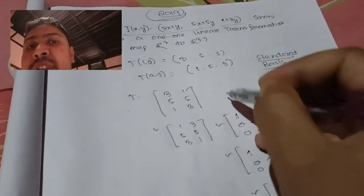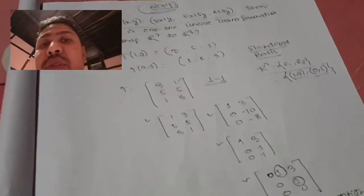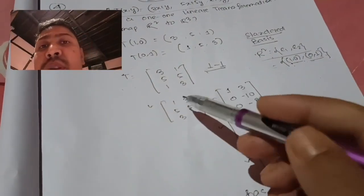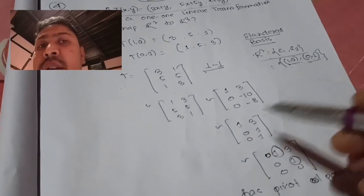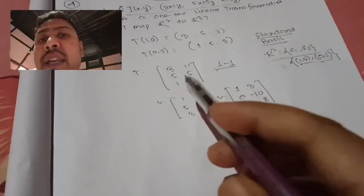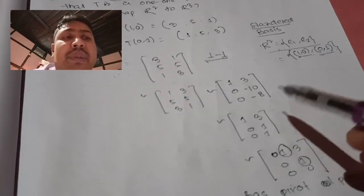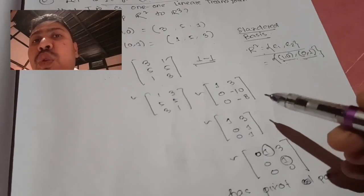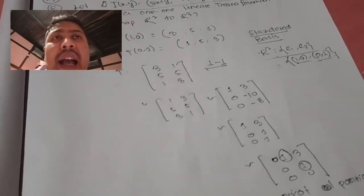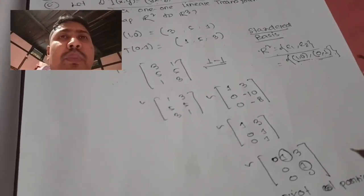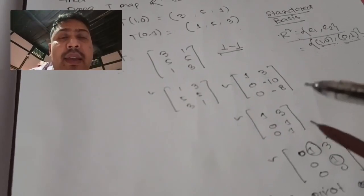Now I will check if this is one-one. To check one-one, I will convert this matrix to row echelon form through proper row transformations. I need to check if all columns have pivot positions. If all columns have pivot positions with non-zero leading entry of 1, then it is one-one.